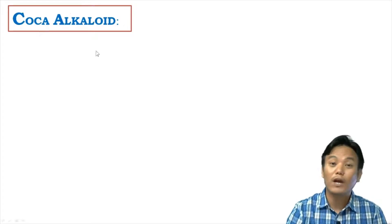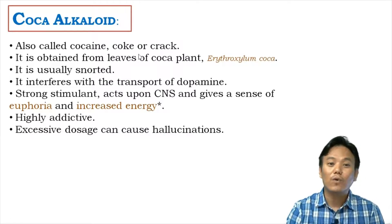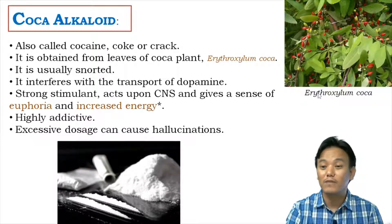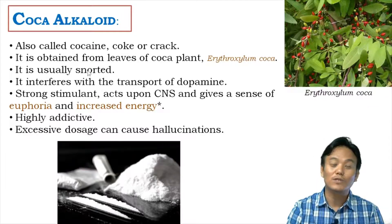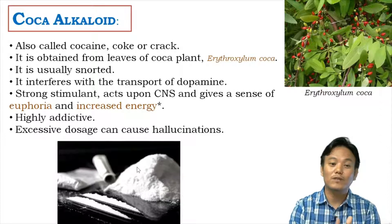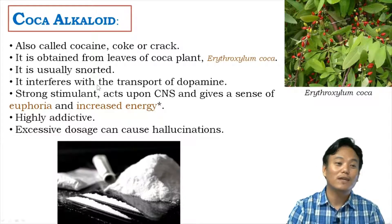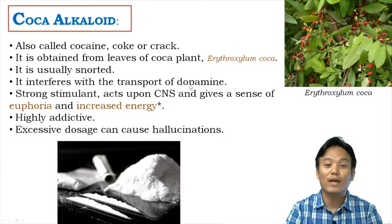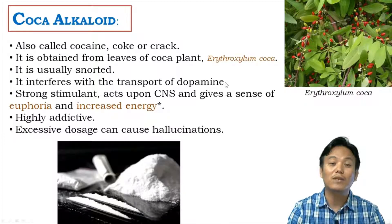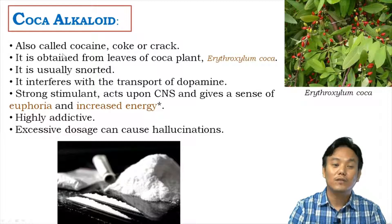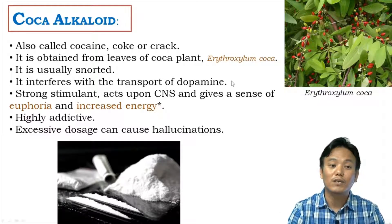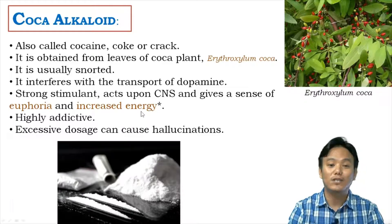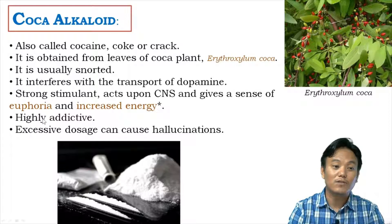Another commonly abused drug is the coca alkaloid, also called cocaine, coke, or crack. It is obtained from the leaves of the coca plant, Erythroxylum coca, and is usually snorted. Cocaine interferes with the transport of dopamine, a neurotransmitter also referred to as the feel-good hormone. This interference increases dopamine concentration in the body, making cocaine a strong stimulant that produces euphoria and a sense of increased energy, making it highly addictive.